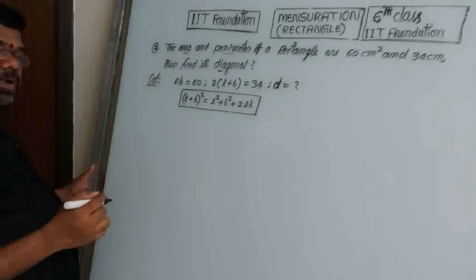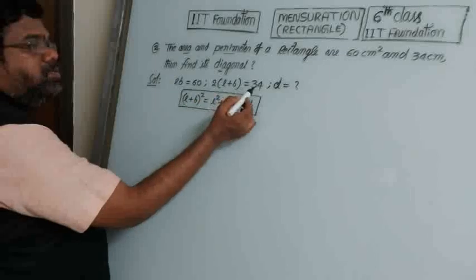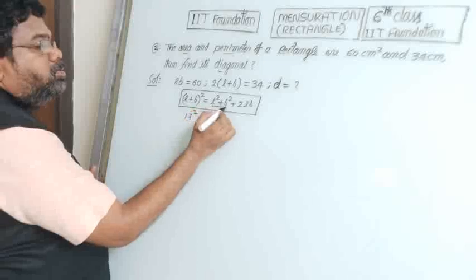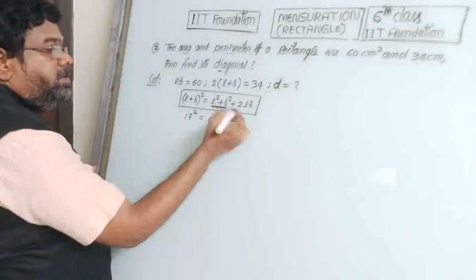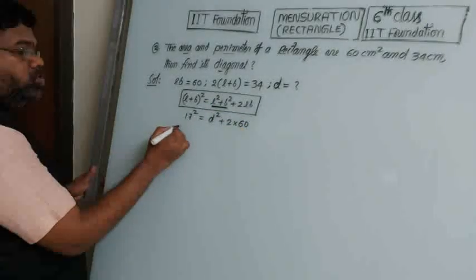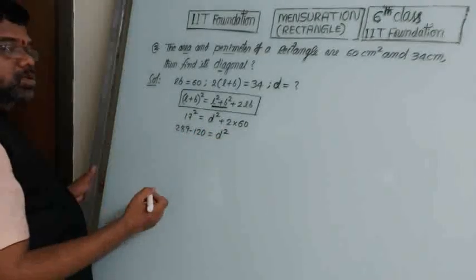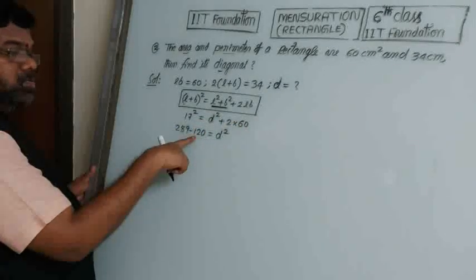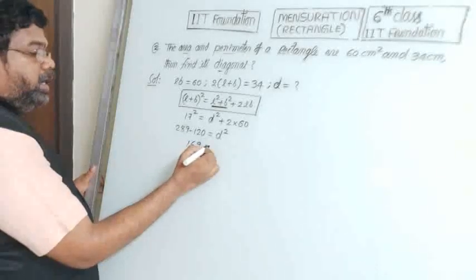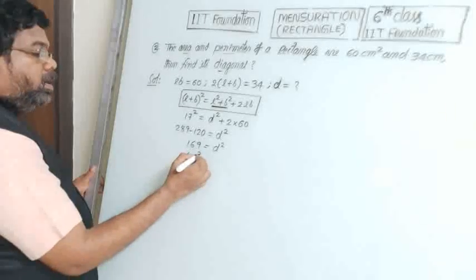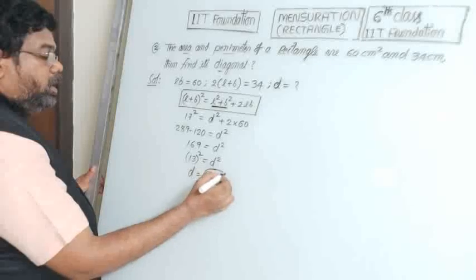D² equals L² plus B². L plus B equals 17 (from perimeter divided by 2). So 17² equals L² plus B² plus 2LB, which gives 289 equals D² plus 2 into 60. So D² equals 289 minus 120 equals 169, which is 13². Therefore D equals 13 centimeters.